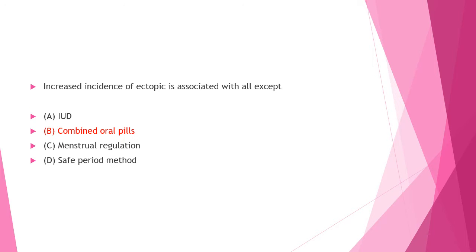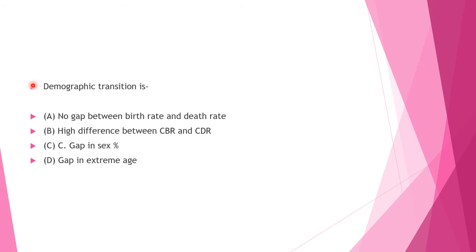Next question: Demographic transition is — Option A: no gap between birth rate and death rate, Option B: high difference between CBR and CDR, Option C: gap in the sex percentage, Option D: gap in the extreme age. Answer to this question is Option A: no gap between birth rate and death rate.